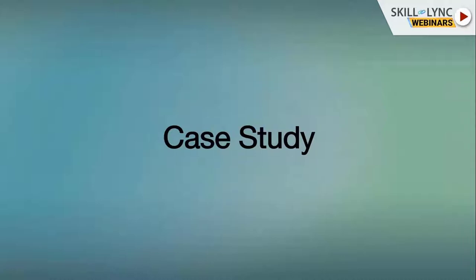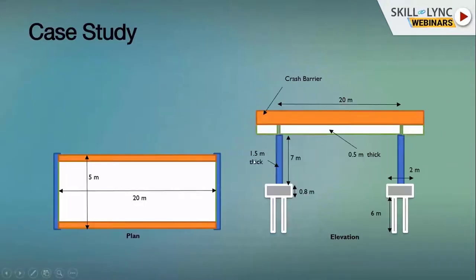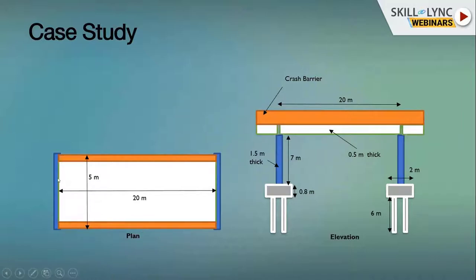Now let's take a simple case study of a simply supported slab bridge. Looking at the top view — the plan — it's a slab bridge with a 20-meter span and 5-meter width. The red rectangular portions are our crash barriers, and the blue colored rectangles are our piers. This is how our bridge looks when viewed from the top.